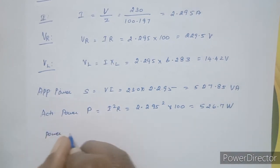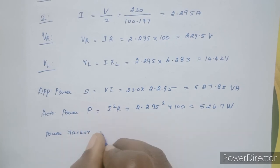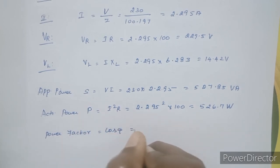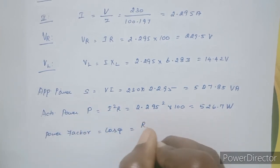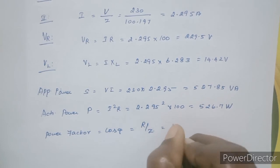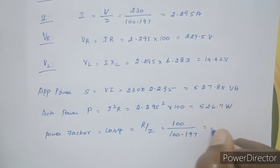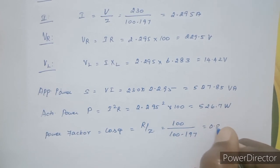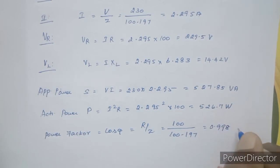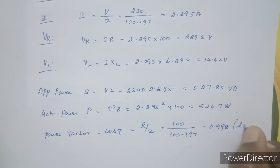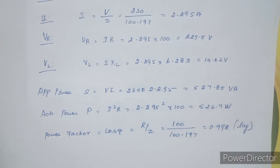Power factor equals cos φ, which equals R divided by Z. Cos φ = 100 / 100.197 = 0.998. Since this is an RL circuit, the power factor is lagging.